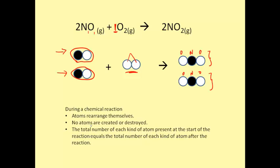During a chemical reaction, you can see that atoms rearrange themselves. No new atoms are created or destroyed. The total number of each kind of atom present at the start of the reaction equals the total number of each kind of atom after the reaction. In this case, on the left side of the equation, we had 2 nitrogens and 4 oxygens. And on the right side—the products—we had 2 nitrogens and 4 oxygens. These atoms have simply rearranged themselves and formed new bonds.